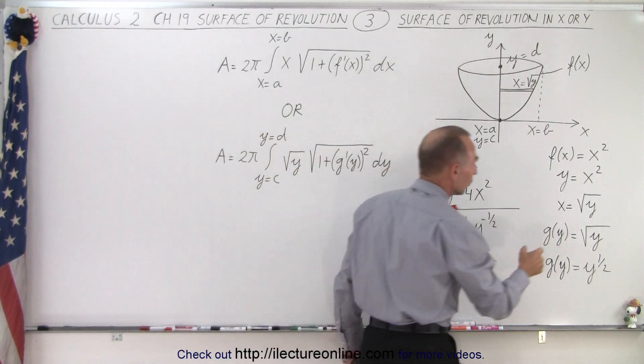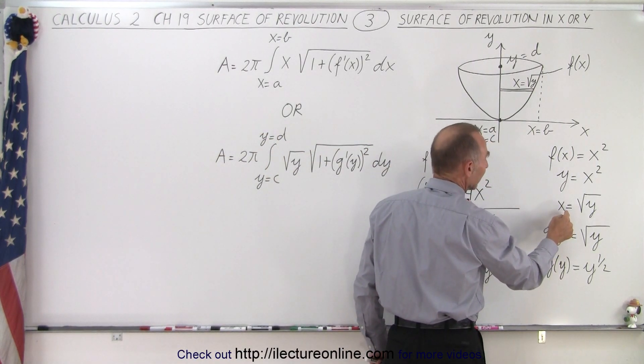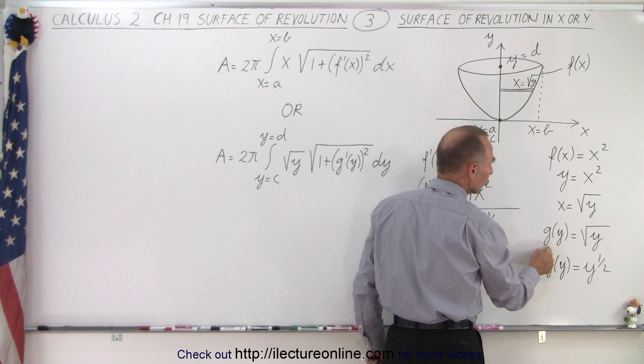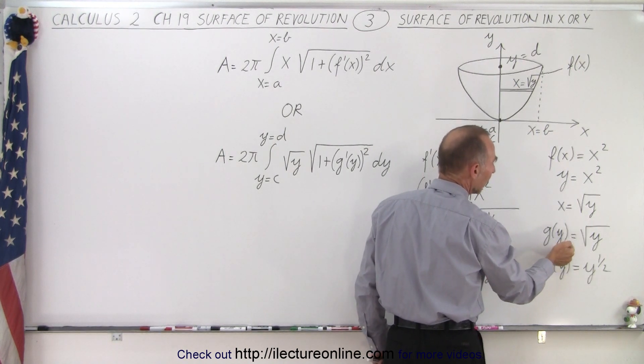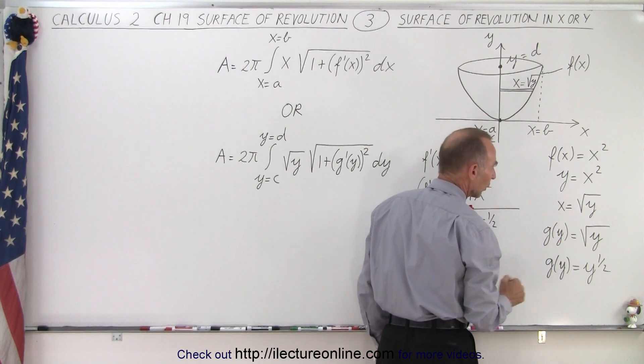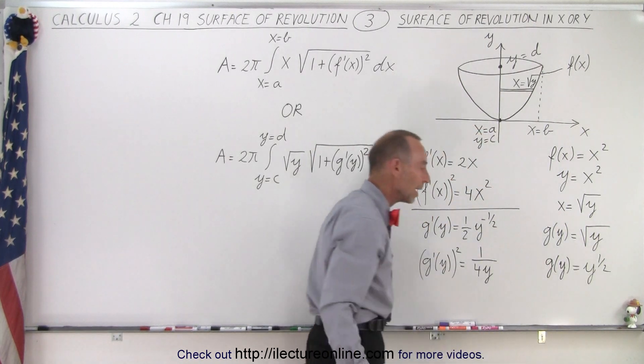Notice though that if you're going to use this concept right here, then x is now becoming the function of y. We'll call it g(y), and so it's equal to the square root of y, or we can write it as y to the one half power.